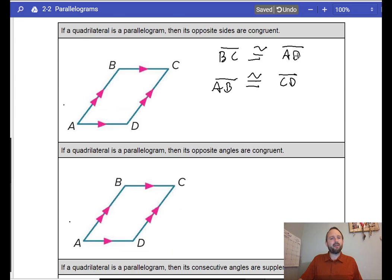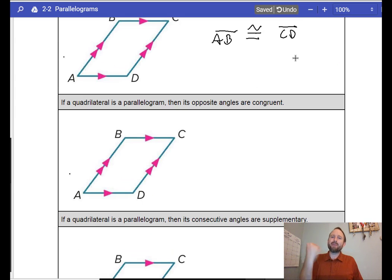Let's go on. If a quadrilateral is a parallelogram, then the opposite angles are congruent. Well, let's say angle A. This C is going to be congruent to A.